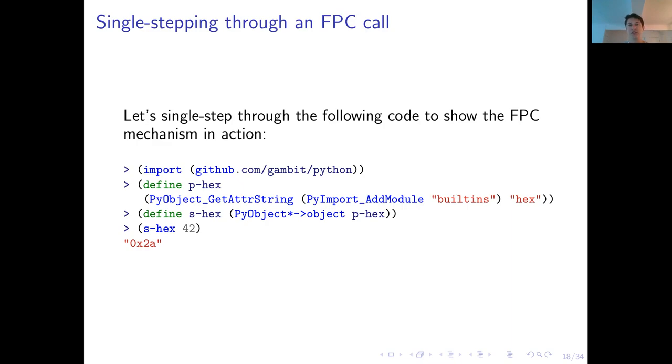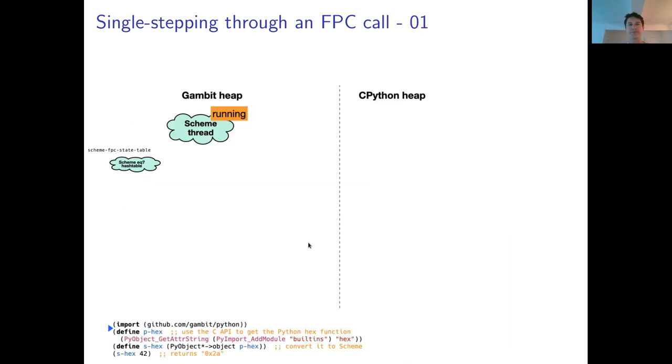To see this mechanism in action, let's go through a single step of this code. And so here we import the Python module. Then we define a Python foreign object because we're calling the C FFI directly and this is the very lowest level interface. And here we can get back the Python built-in hex function that we store in a foreign object and then we can convert it using this procedure which is general and will just dispatch on the object tag that we mentioned earlier and do the proper conversion to obtain a Scheme closure which we can call with the value 42. So right after the import statement here, this is what the heaps look like. There's the Gambit heap on the left and the CPython heap on the right. Both have been initialized when we started the program and during the importation of the module the CPython heap has been initialized by the C FFI.